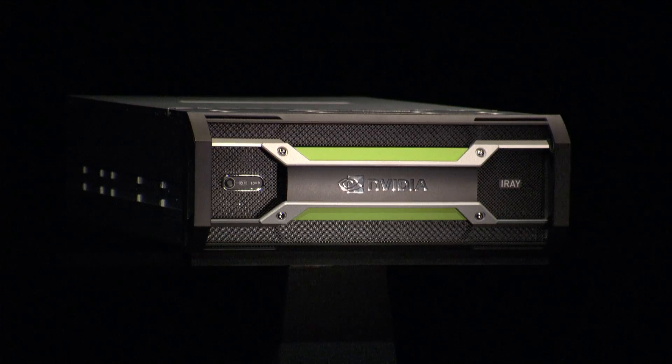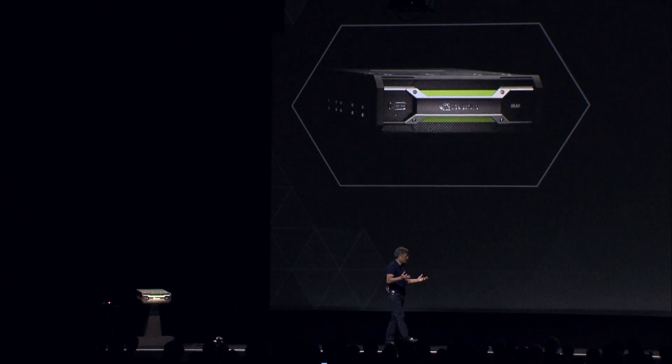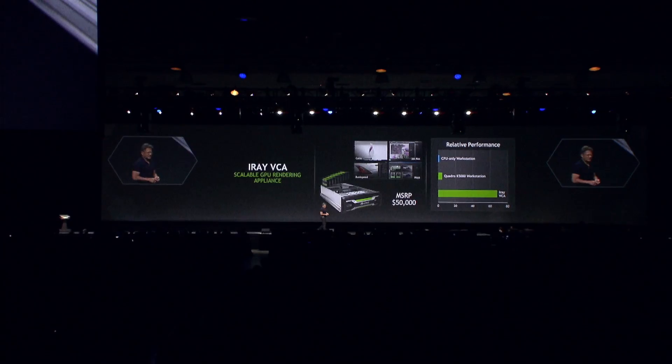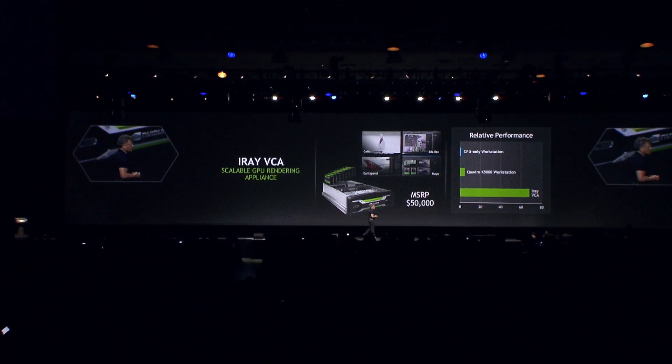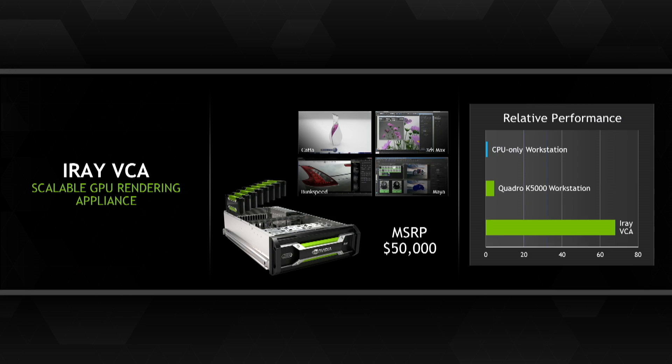If you were to buy 60 workstations and cluster them all together — 60 workstations at $5,000 each for a Quadro K5000 — that's $300,000 worth of workstations. For an amazing price of just $50,000, six times the value, you can have the iRay VCA connected to your network and render photorealistically, instantaneously, in an interactive manner. Ladies and gentlemen, the iRay VCA.